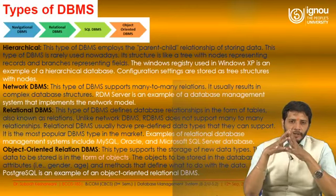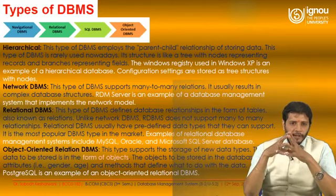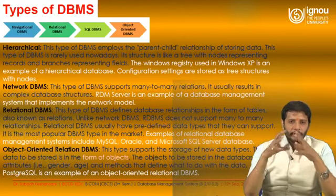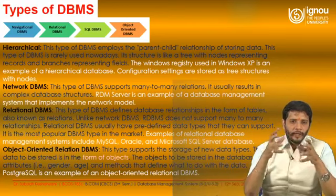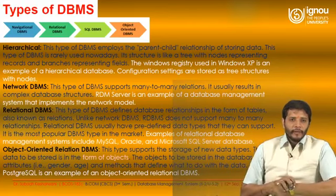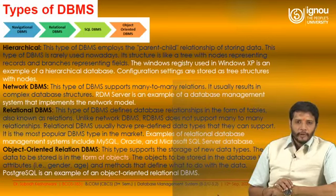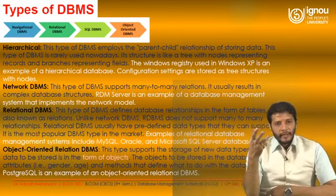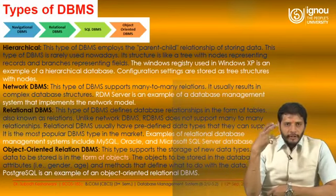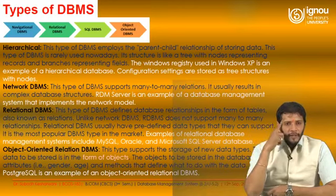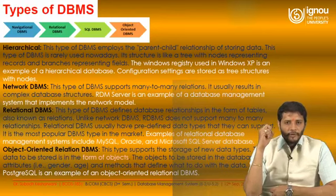Relational database management system defines database relationships in the form of tables, also known as relations. RDBMS does not support many-to-many relationships. Relational databases have predefined data types and can be used by Oracle, Microsoft SQL, or Amazon AWS. Object-oriented DBMS supports storage of new data types, and data is stored in the form of objects with attributes like gender, age, and consumer tastes.